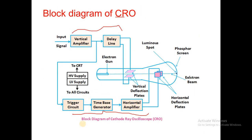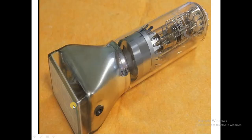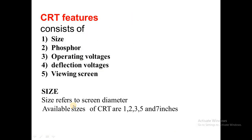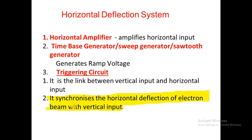The triggering circuit is the link between the vertical amplifier and the time base generator — it acts like a link. It also synchronizes the horizontal deflection of the electron beam with the vertical input.